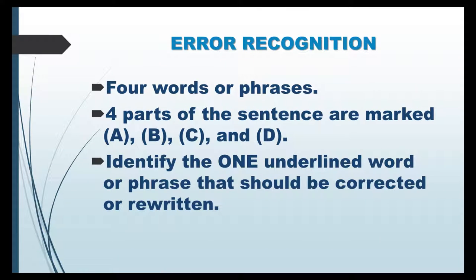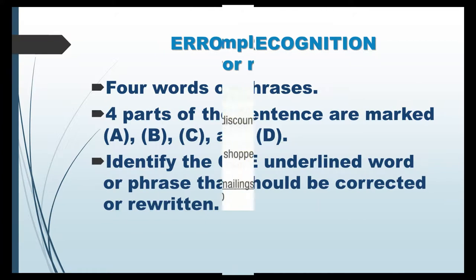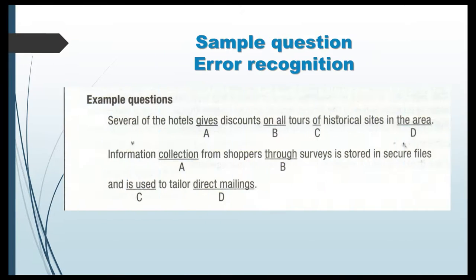In this part of the test, each sentence has four words or phrases underlined. The four underlined parts of the sentence are marked A, B, C, and D. You are to identify the one underlined word or phrase that should be corrected or rewritten. Now, look at a sample question.